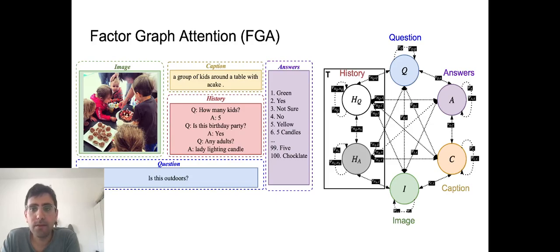We employ our method to Factor Graph Attention. FGA is inspired from graphical models and generates an attention map for each modality such that all the elements can interact. In the visual dialogue task, we have 25 modalities - one for each question and answer history, one for the question, for the answer, for the caption, and for the image.